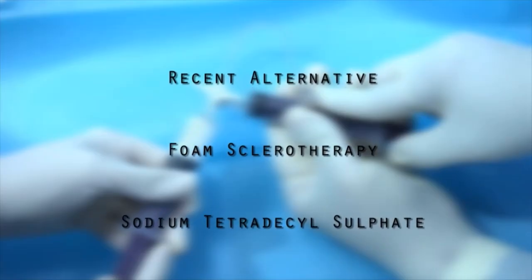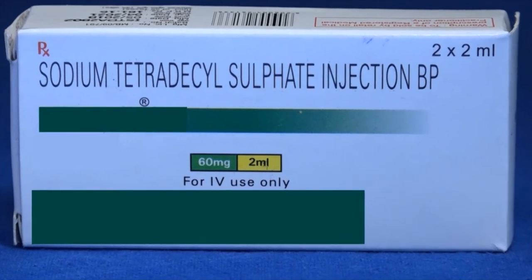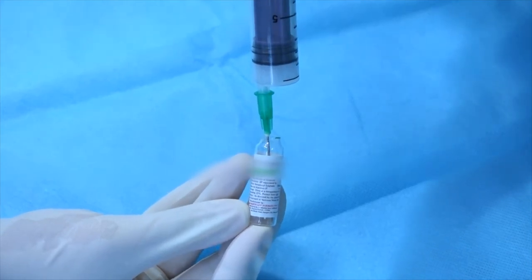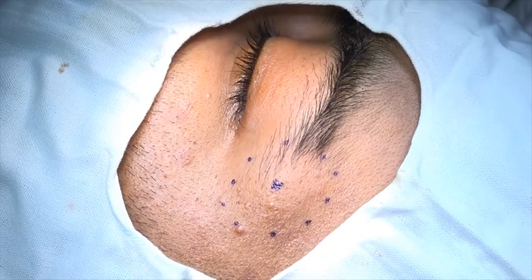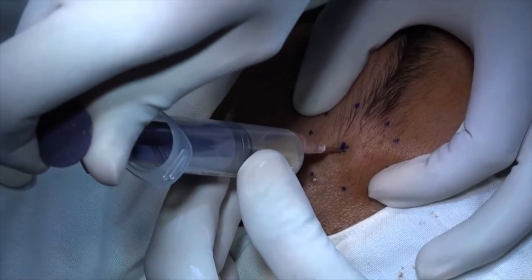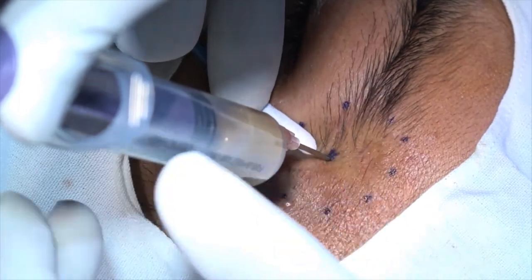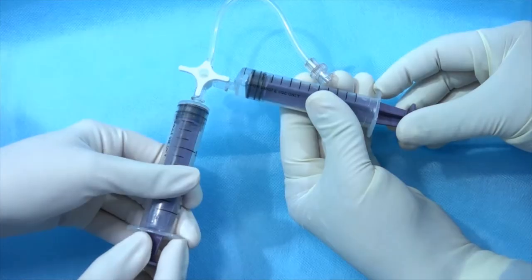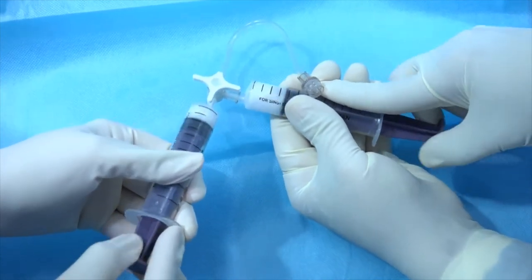While extensive surgery with en-bloc excision is an option, a recent alternative for dumbbell dermoids is minimally invasive foam sclerotherapy with an anionic surfactant, sodium tetradecyl sulfate, at a concentration of 30 mg per ml. Under local anaesthesia, the perimeter and epicentre of the lesion are marked and an 18-gauge needle is used to aspirate the contents of the cyst ensuring complete collapse. Here, 4 cc of contents were aspirated and 1 cc of sodium tetradecyl sulfate was foamed to 2 cc by the modified Tessari two-syringe technique.